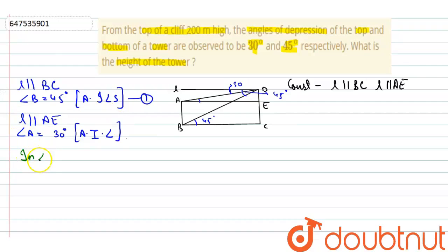Now, in triangle DAE, tan 30 degree will be DE upon AE. So, tan 30 is equal to 1 by root 3. And let's assume that BC is equal to X. So, BC is X. Then we can say that AE is also X. So, DE upon X. We can say that X is equal to root 3 DE.